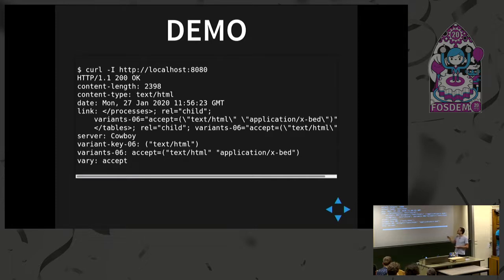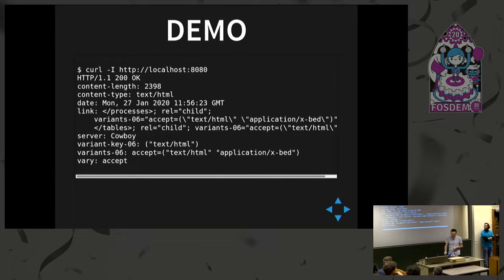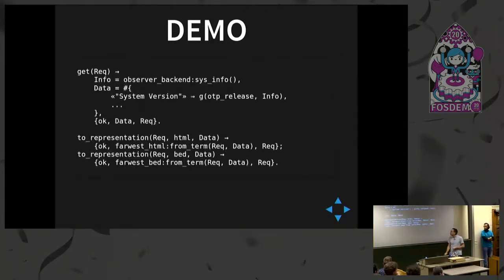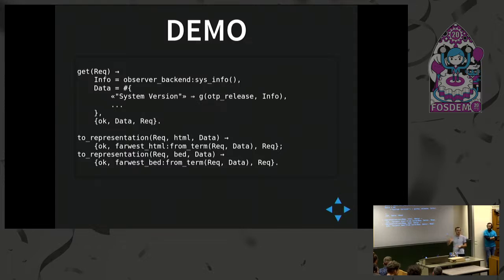Currently variants is not a standard — it's a draft, that's why it's variants-06. For the resource itself, you also have variants which tells you it can give you HTML or binary. Then you implement the GET function that retrieves data and converts it into a representation. This demo is basically a web version of the Erlang observer tool — we get the information and return it without doing any formatting at that point. Then Far West will keep this data and when it needs to convert it to a representation, it will call the function to_representation.